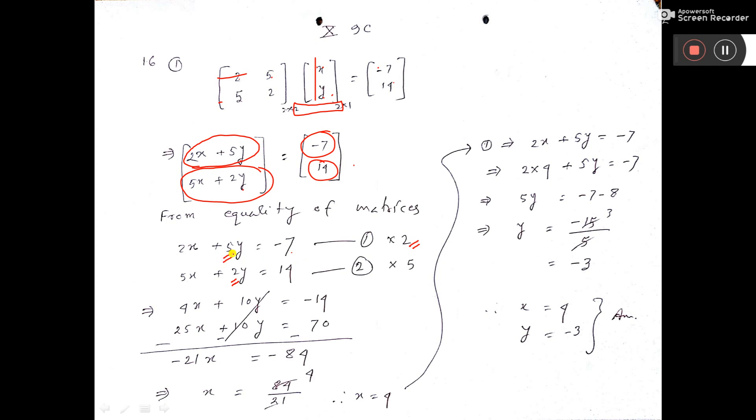Here coefficient is 5 so multiply by 5. Now 2 times 2 is 4, 2 times 5 is 10, 2 times 7 is 14, 5 times 5 is 25, 5 times 2 is 10, 5 times 14 is 70.